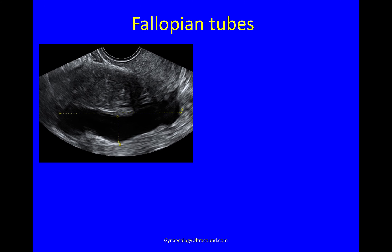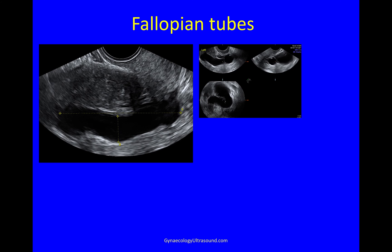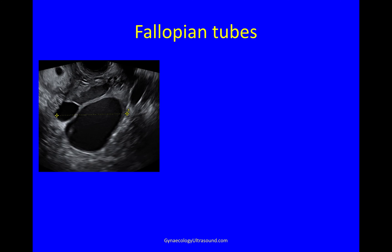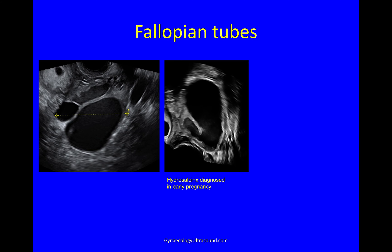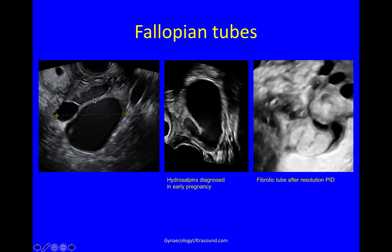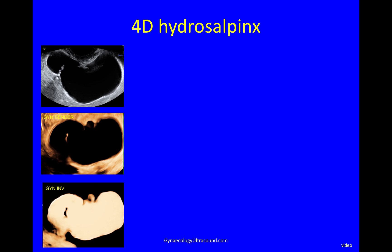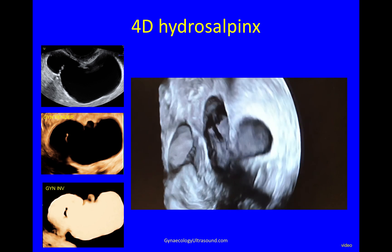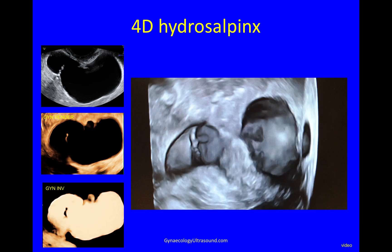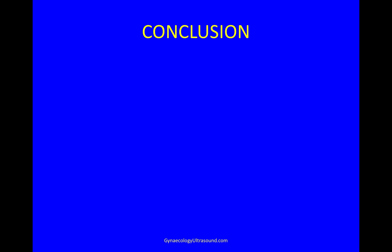3D is very useful for looking at the fallopian tubes. Here there was a pocket of fluid behind the uterus — whether free fluid, loculated fluid, or a hydrosalpinx was unclear — and taking a 3D volume made it instantly obvious it was a hydrosalpinx. In another case, an adnexal mass lateral to the uterus was hard to characterize on 2D, but on 3D it was clearly hydrosalpinx with only a small portion being ovary. After PID the tube can become very fibrotic and thickened, and on 3D you can render the image or take a video clip to look inside and confirm the hydrosalpinx.